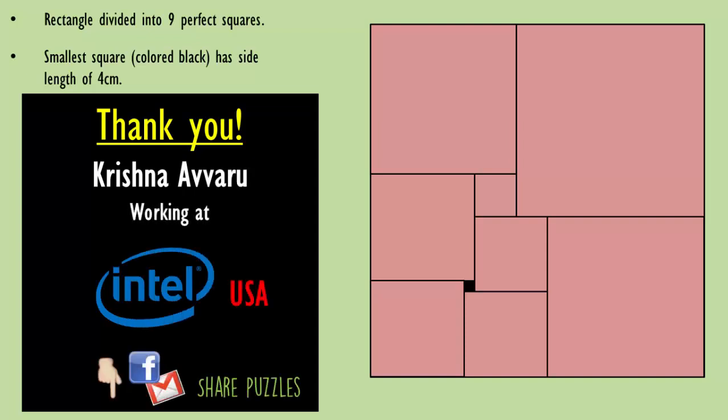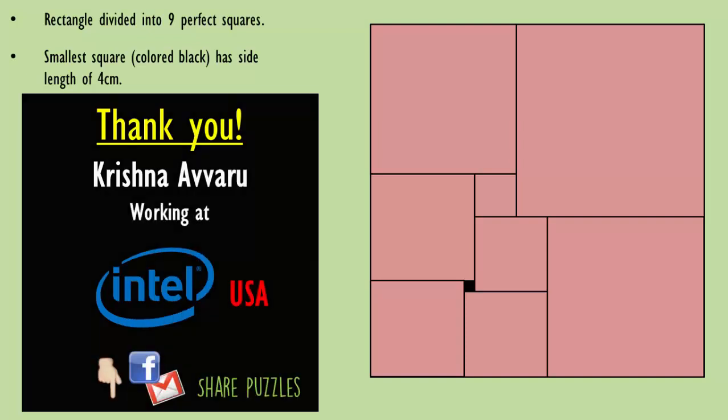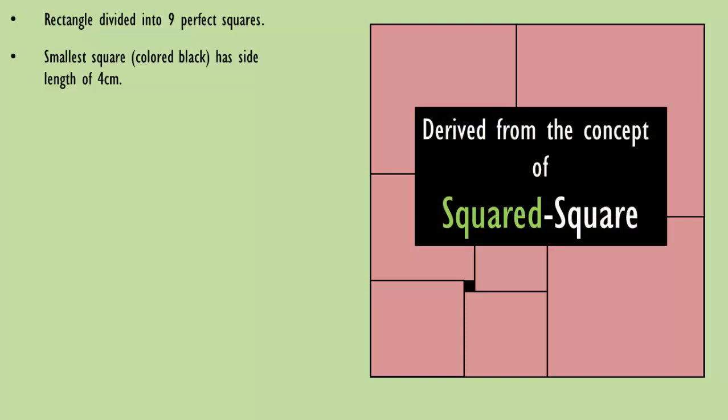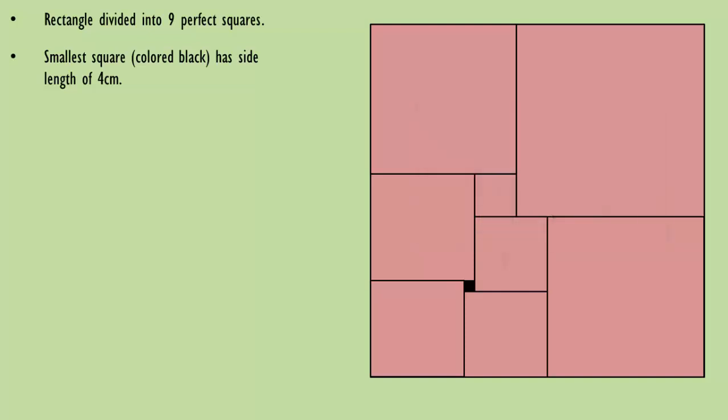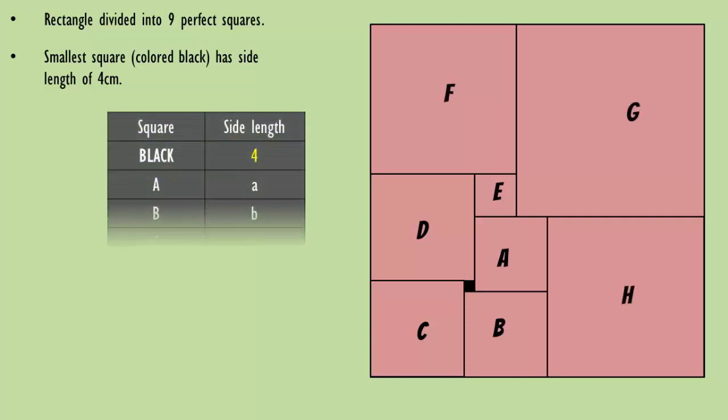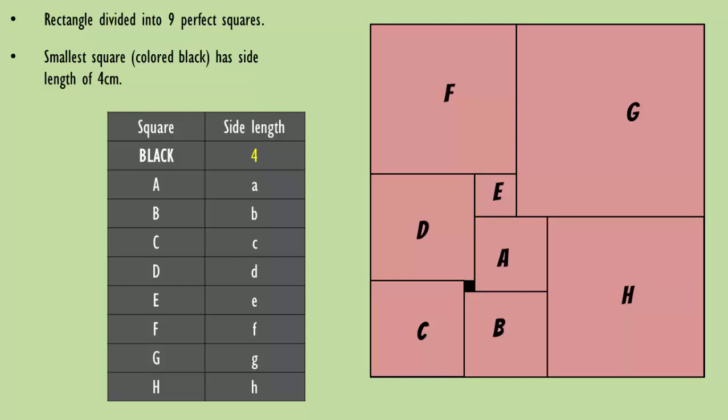I'd like to thank Krishna for sharing this very unique math puzzle. It's derived from the concept of squared square, on which I'll post a detailed video in the near future. Let's see how to solve this problem. Let's name the remaining eight squares from A to H. You can name them in any order and let's denote their respective side lengths in lower case.